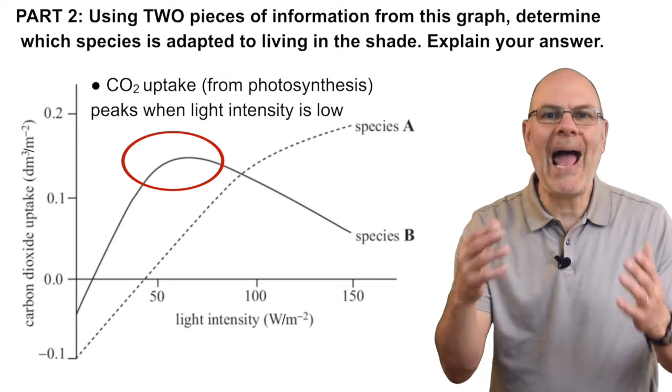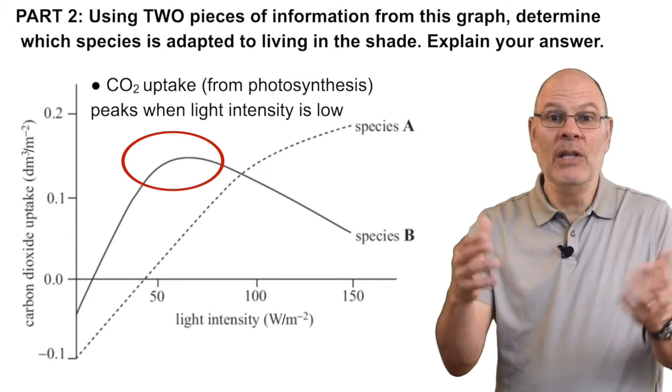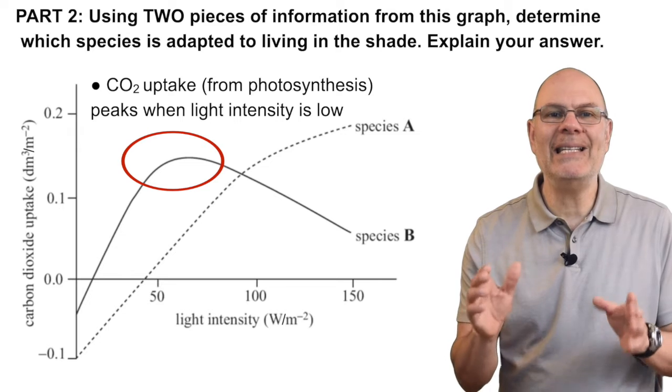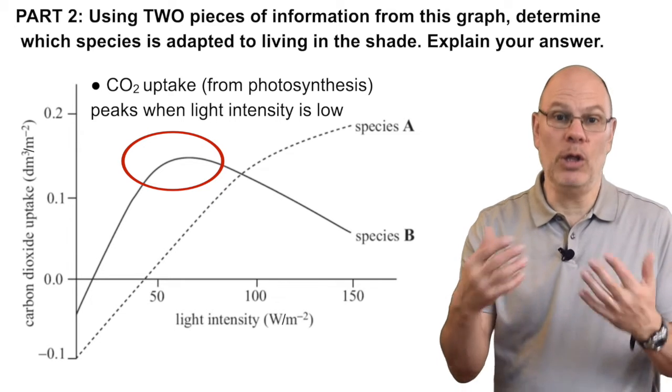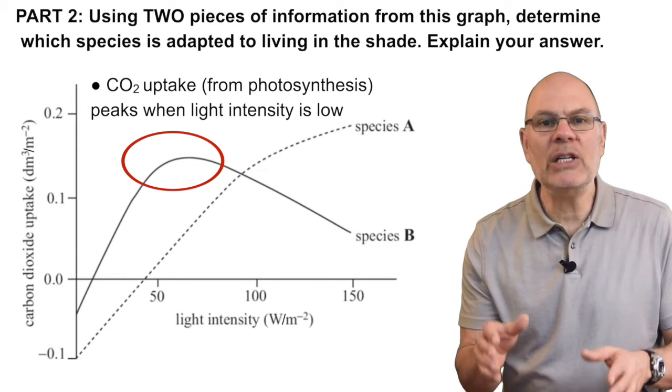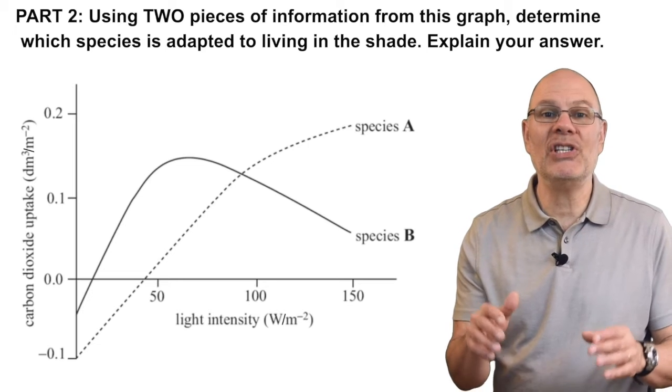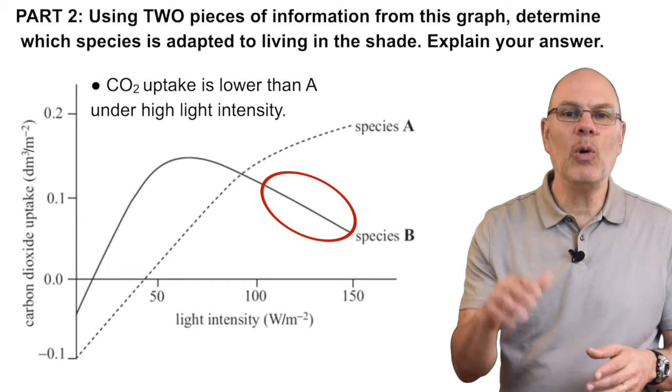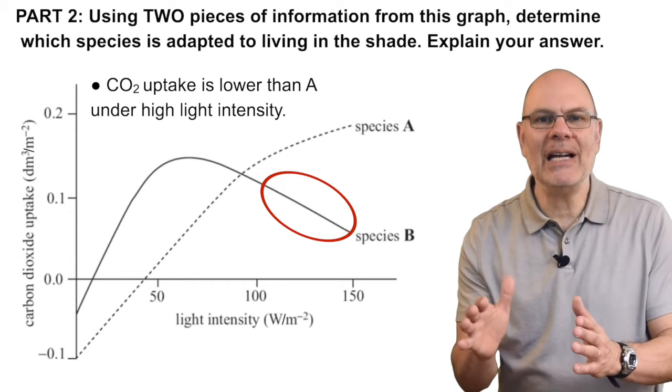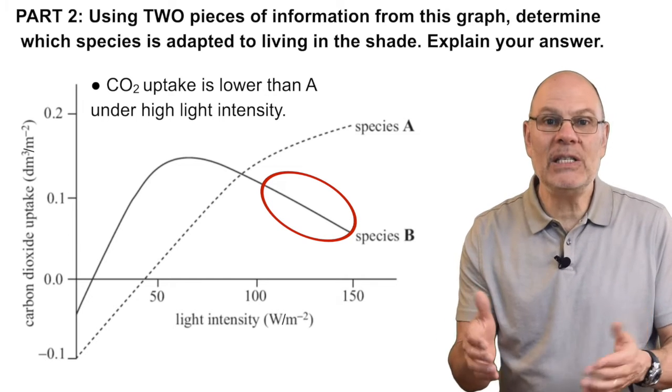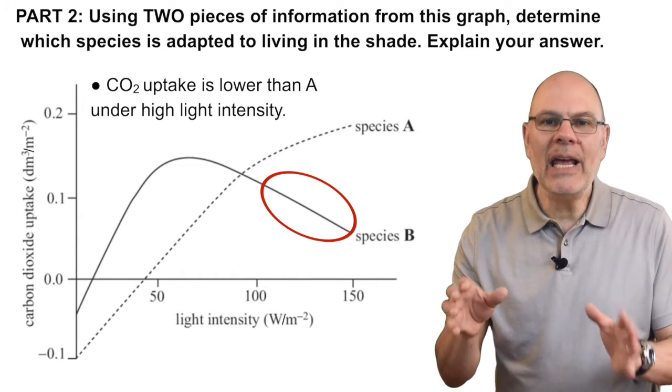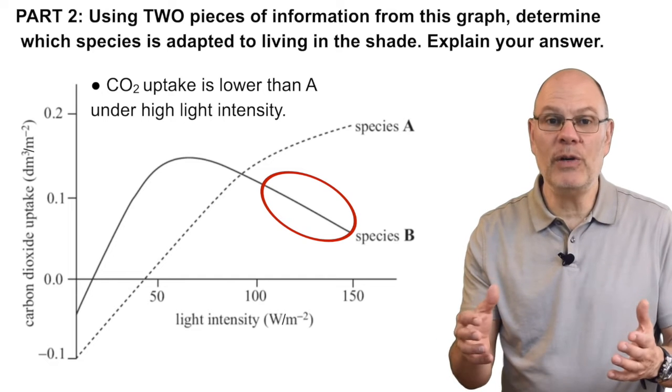If species B were a house plant, it would be the kind that doesn't have to be right by the window. It's shade adapted. It can survive with lower light intensity. Second, you know that B is a shade plant because its CO2 uptake is lower than A under high light intensities. This suggests that this species, species B, is unable to make good use of increased sunlight.